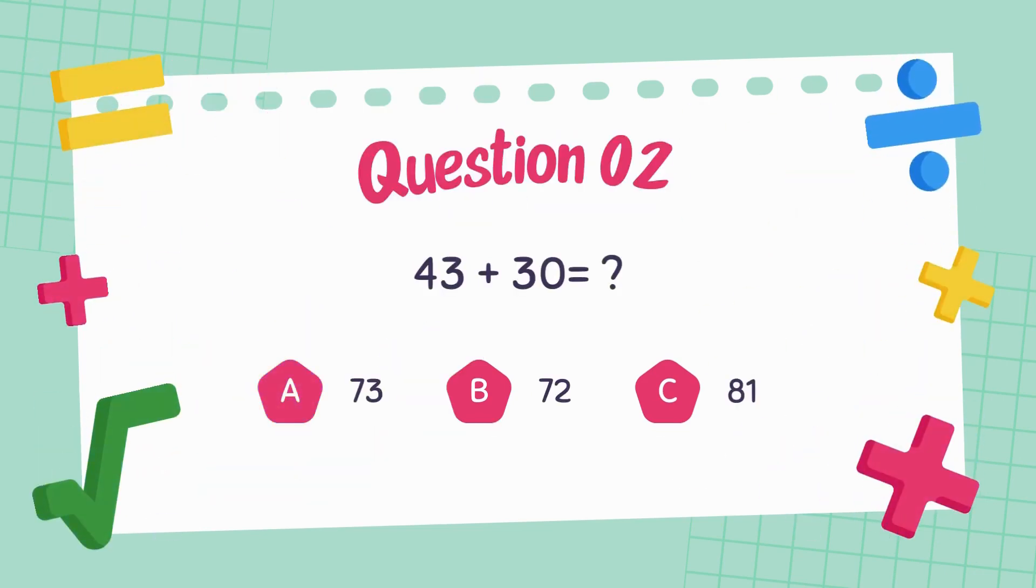Question 2. What is the sum of 43 and 30? Absolutely correct. The answer is 73.